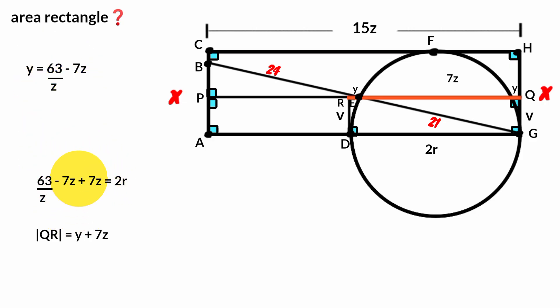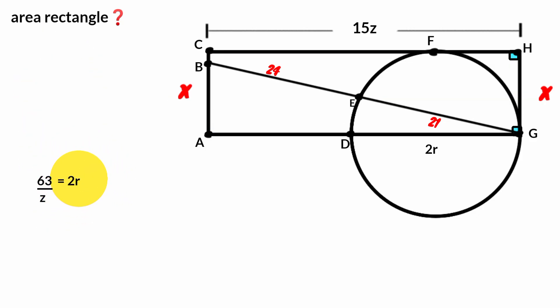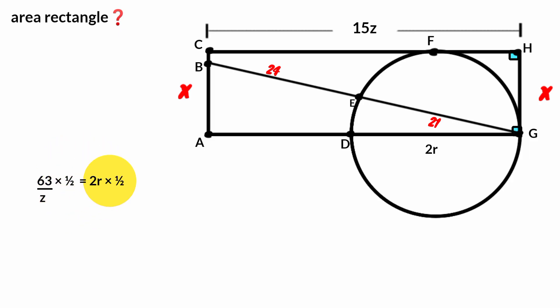Recall that Y = 63/Z − 7Z. Substitute: 63/Z − 7Z + 7Z = 2R. The −7Z and +7Z cancel, so 63/Z = 2R. Multiplying both sides by 1/2: R = 63/(2Z).